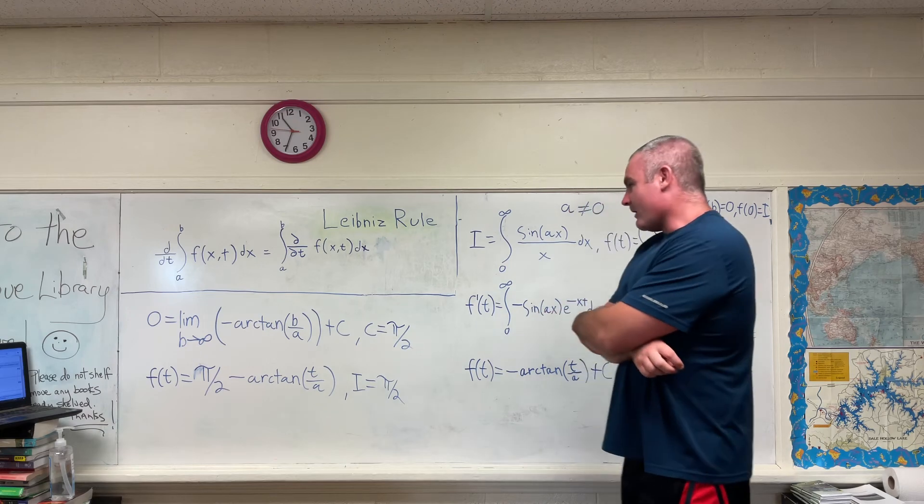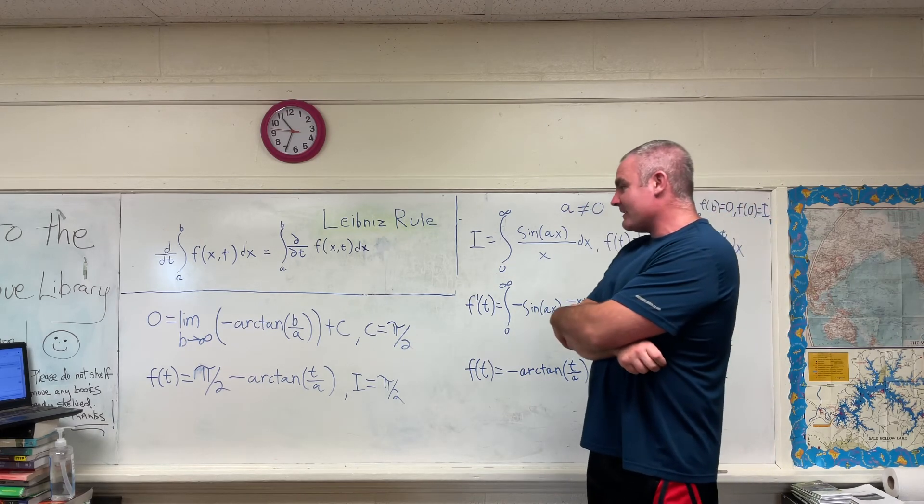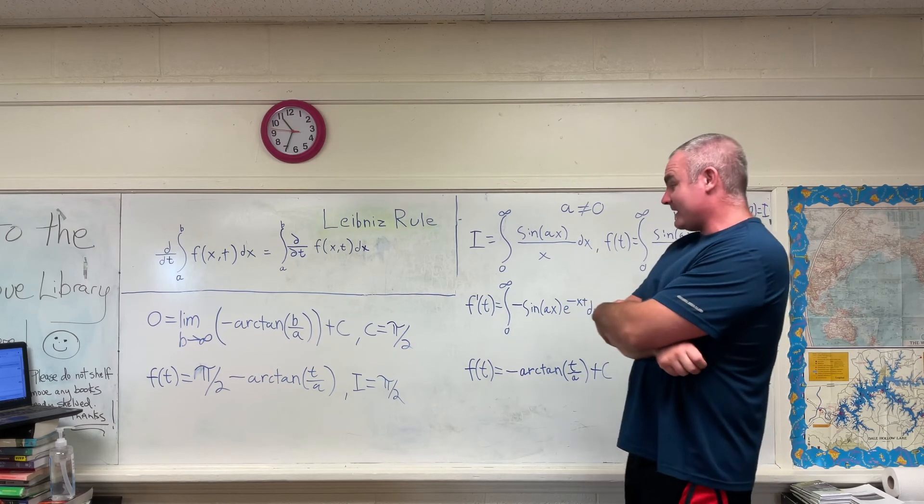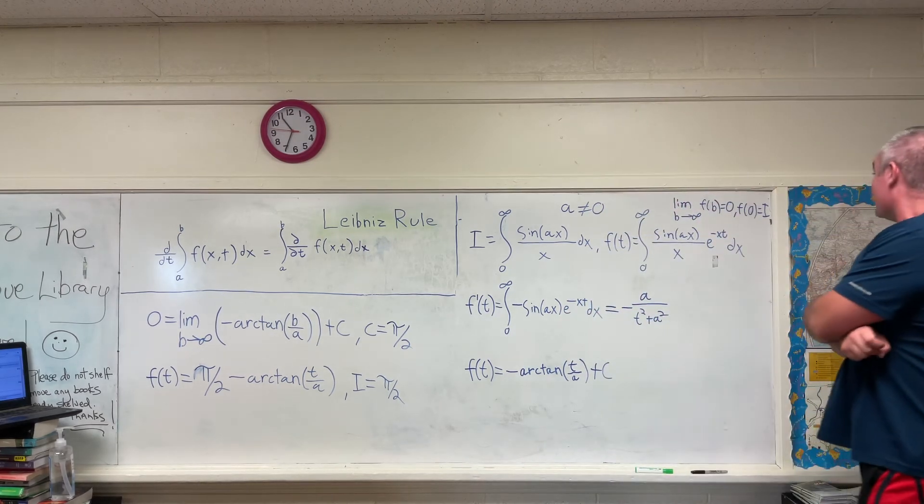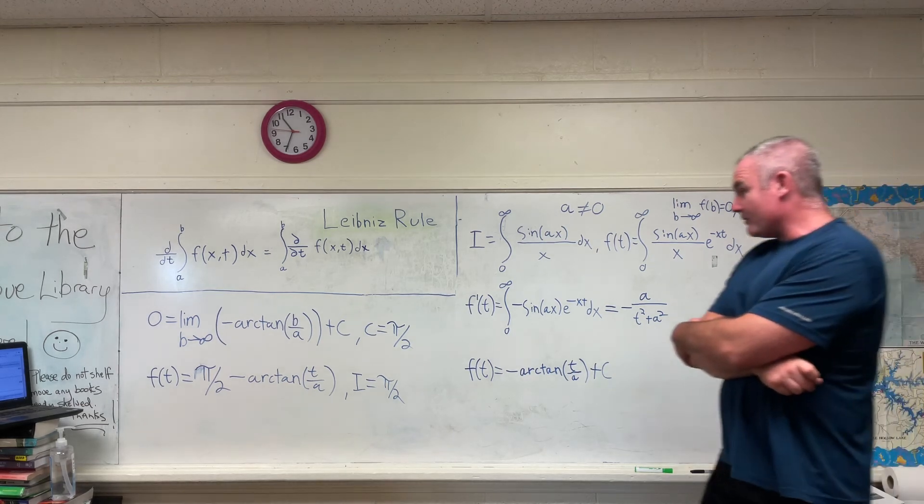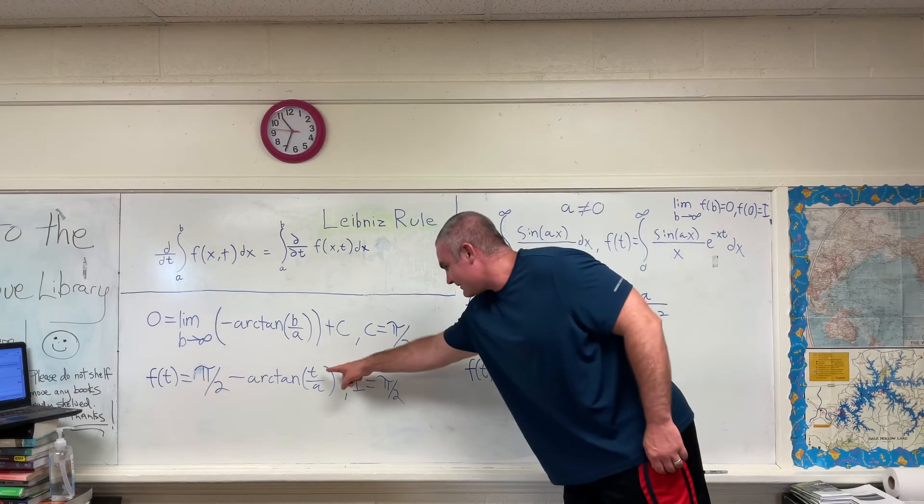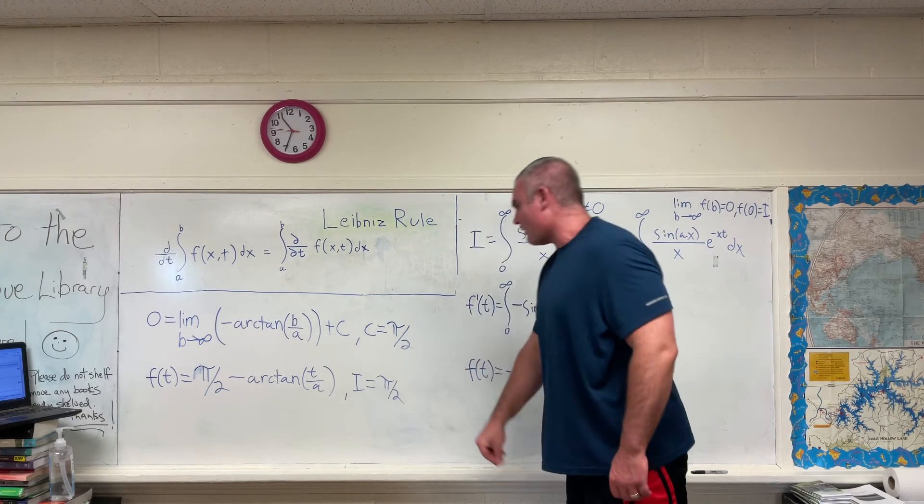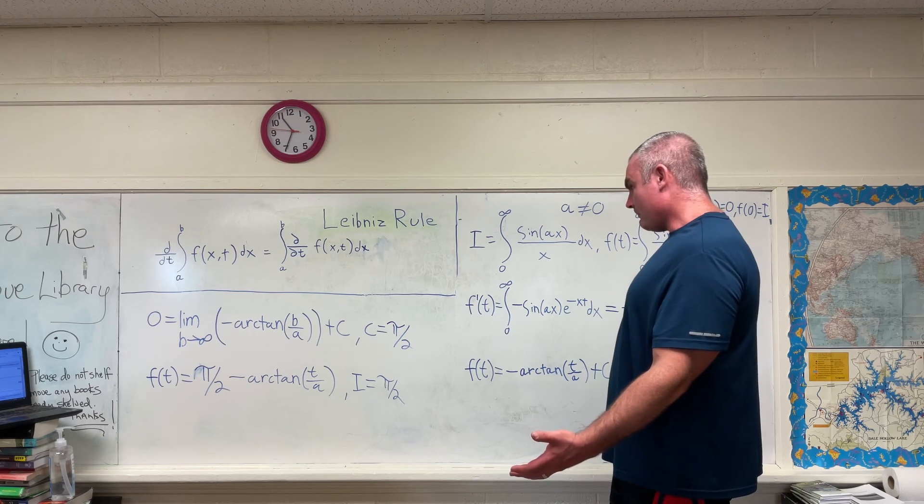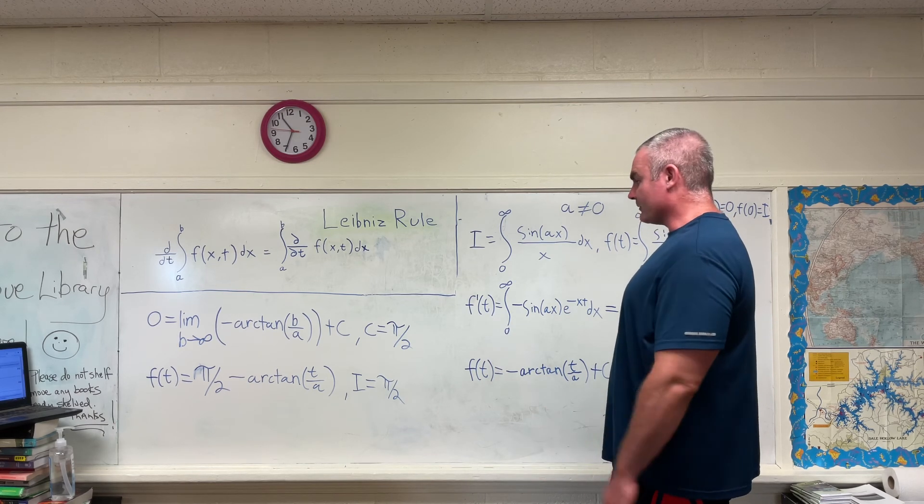So then we can arrive at a final expression for f of t, which will be f of t is equal to pi over two minus the arc tangent of t over a. Now plugging in zero for our function of t gives us our original integral. So let's see what happens when we do that. We plug in zero here. Zero over anything is zero. Arc tangent of zero is zero. So the answer is pi over two.